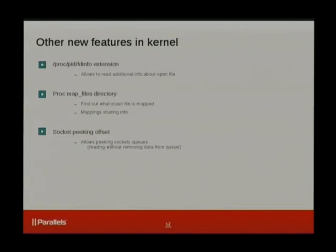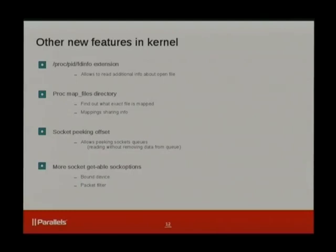Yet another feature in the network subsystem is socket peek offset. With the recvmsg system call, you can peek at a message from a queue without removing it, but peeking only works on the very first message. If you have a UDP socket with more than two packets, you cannot peek at the second or third packet. So we introduced a socket option that allows you to specify which message to peek. We also went through all socket options that a process could set but couldn't read back — for example, the device the socket is bound to, or the BPF filter state — and made those socket options readable as well.